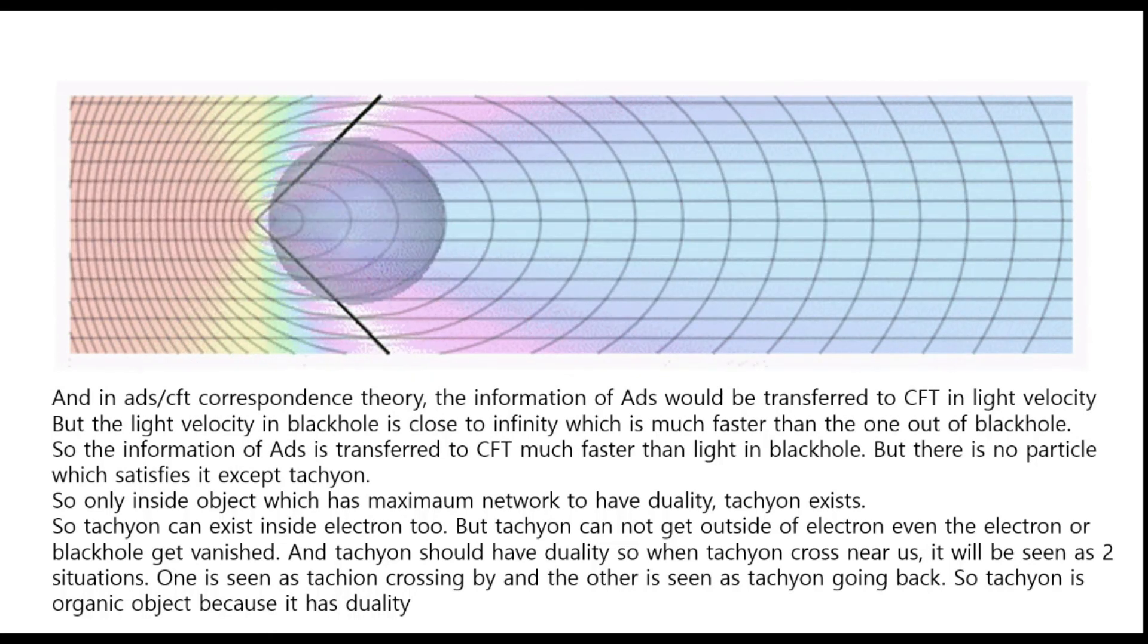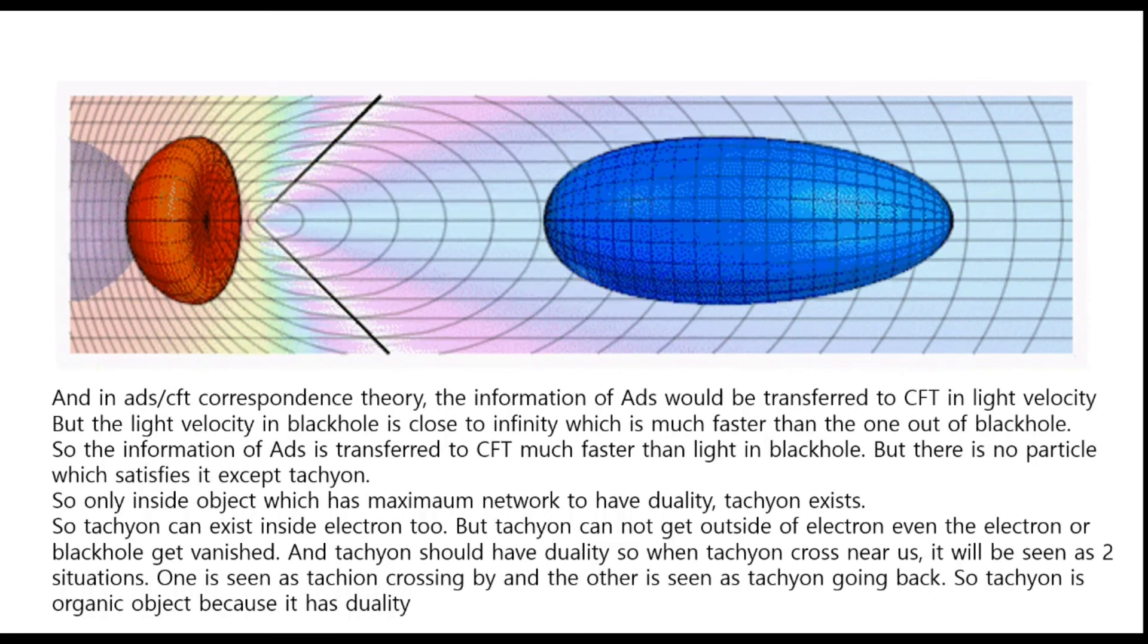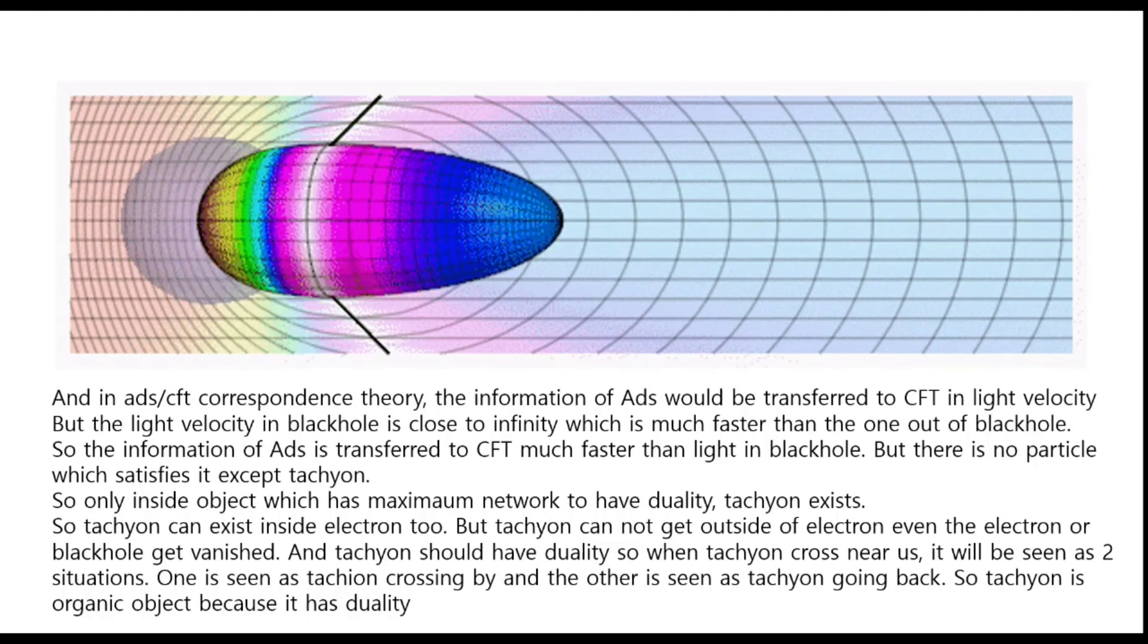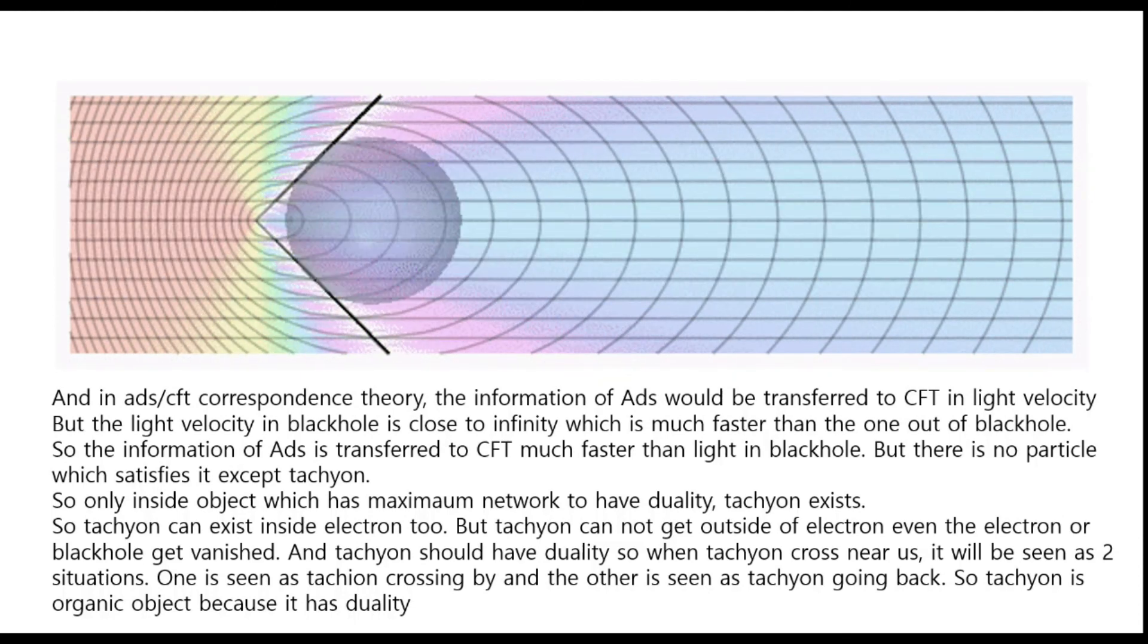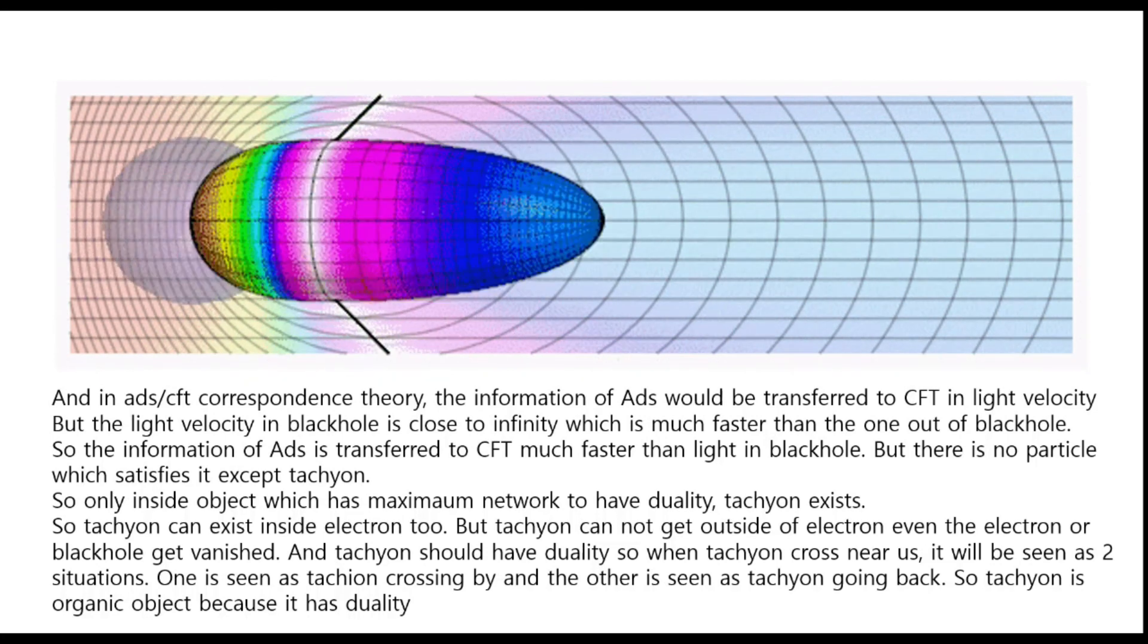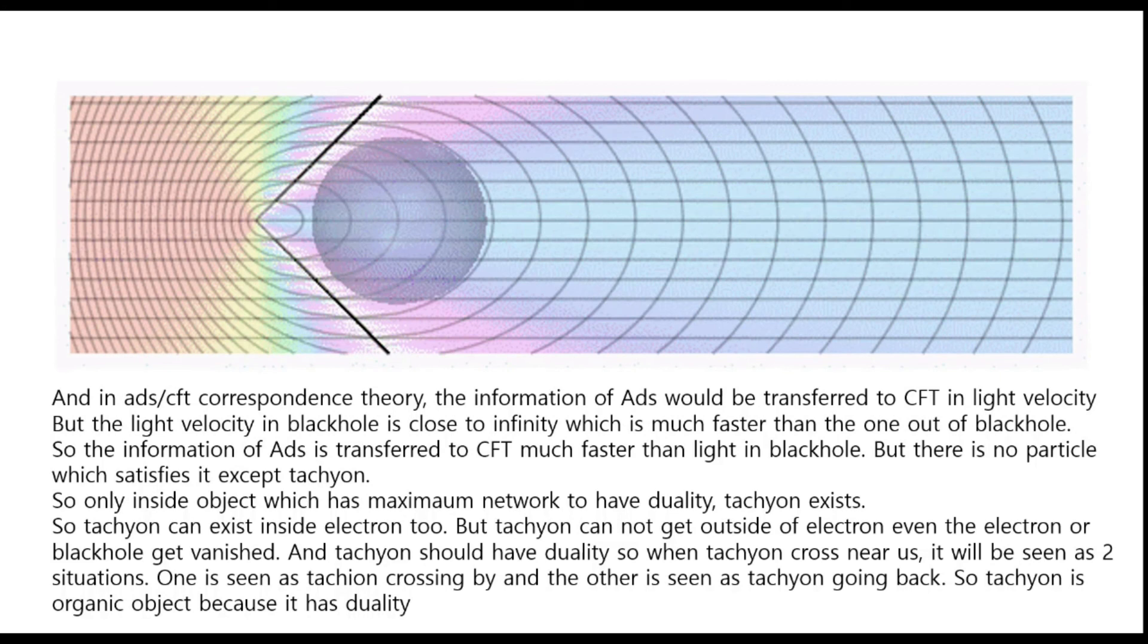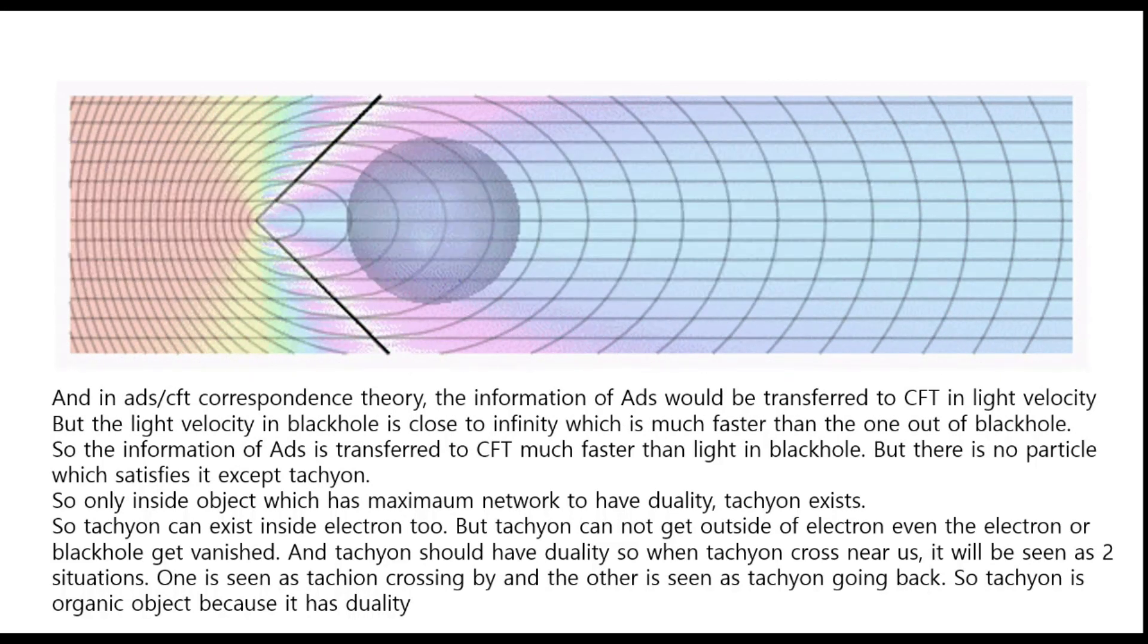Tachyon can exist inside the electron too, but tachyon cannot get outside of electron, even if the electron or black hole gets embedded. And tachyon should have duality, so when tachyon crosses near us, it will be seen as two situations. One is seen as tachyon crossing by, and the other is seen as tachyon going back. So tachyon is organic object because it has duality.